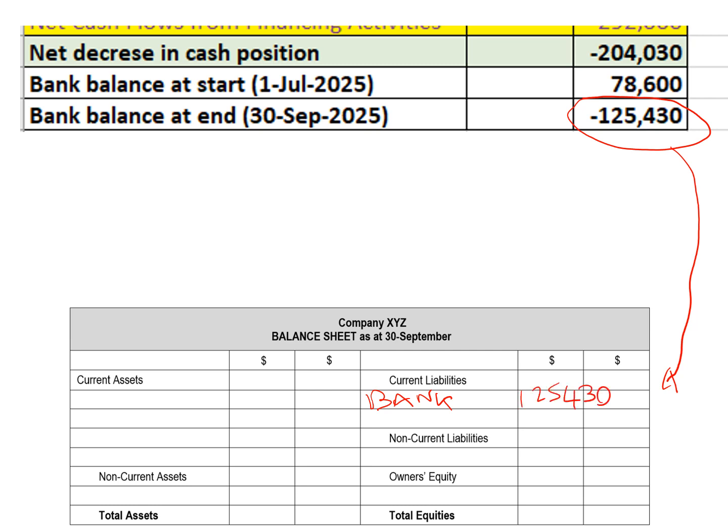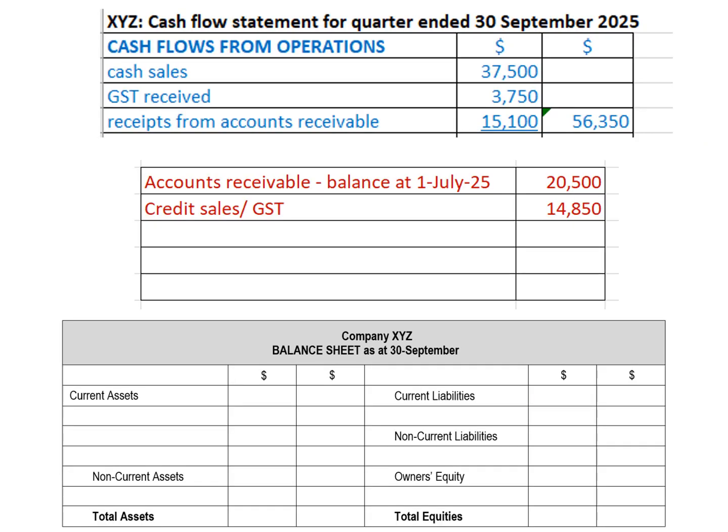Going back up to the top of the cash flow statement, we're in the cash flow from operations, looking at inflows from our day-to-day activities. The first one is cash sales. Cash sales is revenue — revenue doesn't appear in the balance sheet. It goes in the income statement, so we don't need to worry about that for our balance sheet.